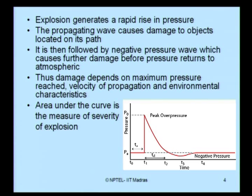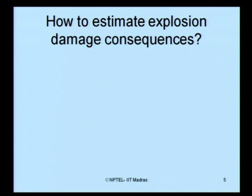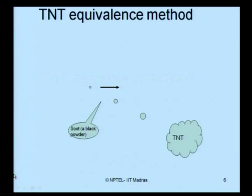The fundamental question is: how do we estimate the explosion damage consequences? An explosion results in an instantaneous increase in pressure to a very high value, then the pressure drops down and goes negative before returning to atmosphere, causing damage. How do we estimate these damage consequences on any object? There are many methods available in the literature. One common method is what we call the TNT equivalence method.